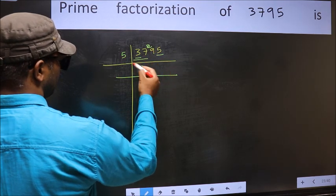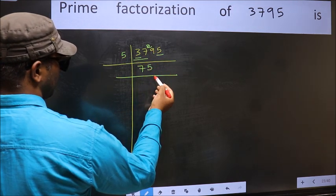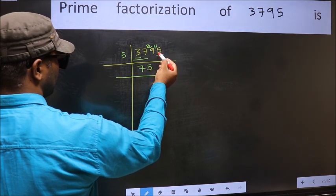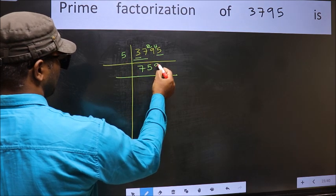A number close to 29 in 5 table is 5 5's 25. 29 minus 25, 4, 4 carried forward 45. When do we get 45 in 5 table? 5 9's 45.